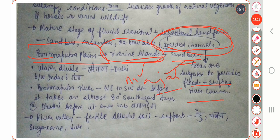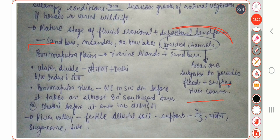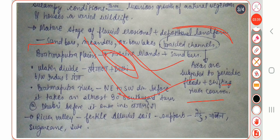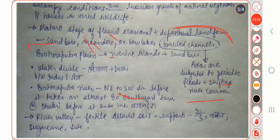A riverine island forms when a river shifts its courses. For example, the river deposits sediment and some land remains surrounded by water, forming an island within the river — that is what a riverine island means.